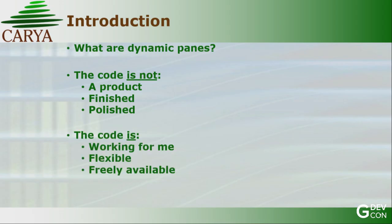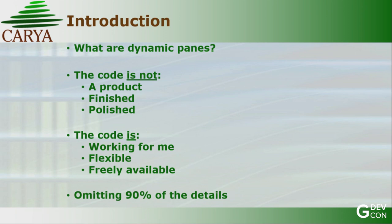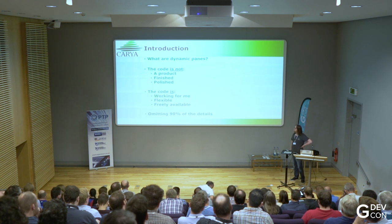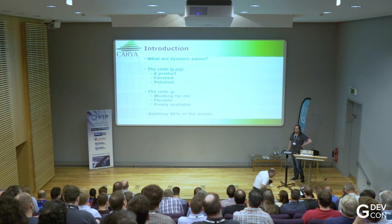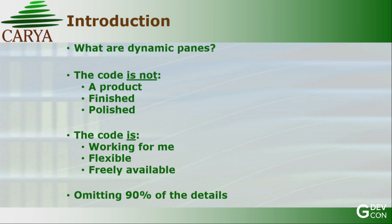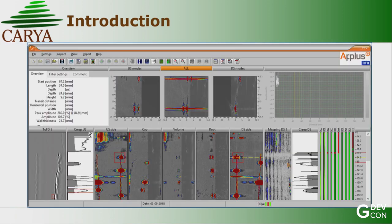The code I'm showing is not a product - it's not finished, not polished. However, the code is working well for me, it's flexible, and it's going to be freely available. I will omit a lot of details; there's a lot of nitpicky stuff in the library I'm just going to leave out, otherwise we won't finish in 45 minutes.